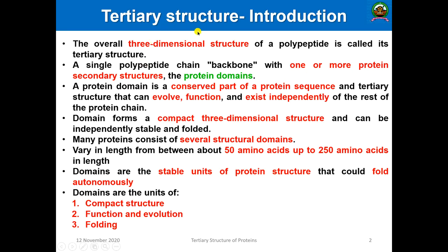Tertiary structure can be defined as the overall three-dimensional structure of a polypeptide chain. It is a single polypeptide chain backbone with one or more protein secondary structures. In the previous class we saw secondary structures — both the alpha helical structure and the beta pleated sheet. Tertiary structure comprises one or more types of secondary structure, either alpha or beta or a mix of both.